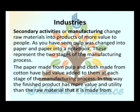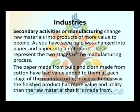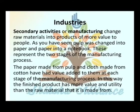Secondary activities involve manufacturing, which changes raw materials into products of more value to people. For example, pulp is changed into paper, and paper into a notebook — these represent two stages of the manufacturing process. The finished product has more value and utility than the raw materials it is made from.